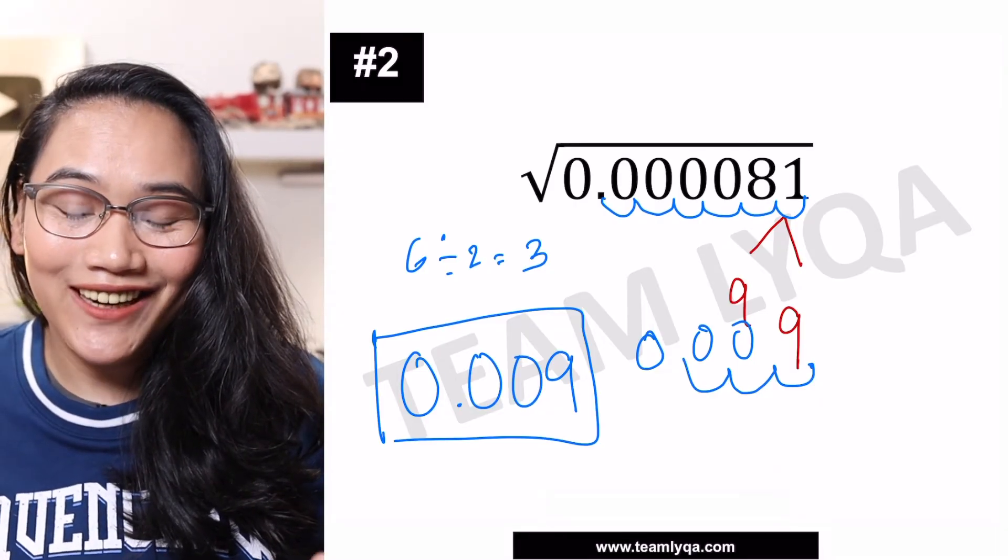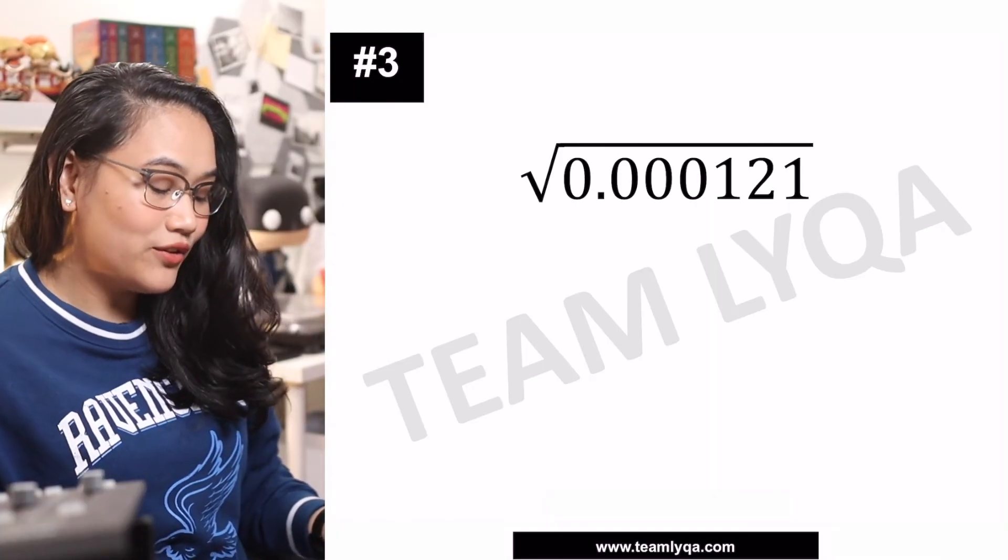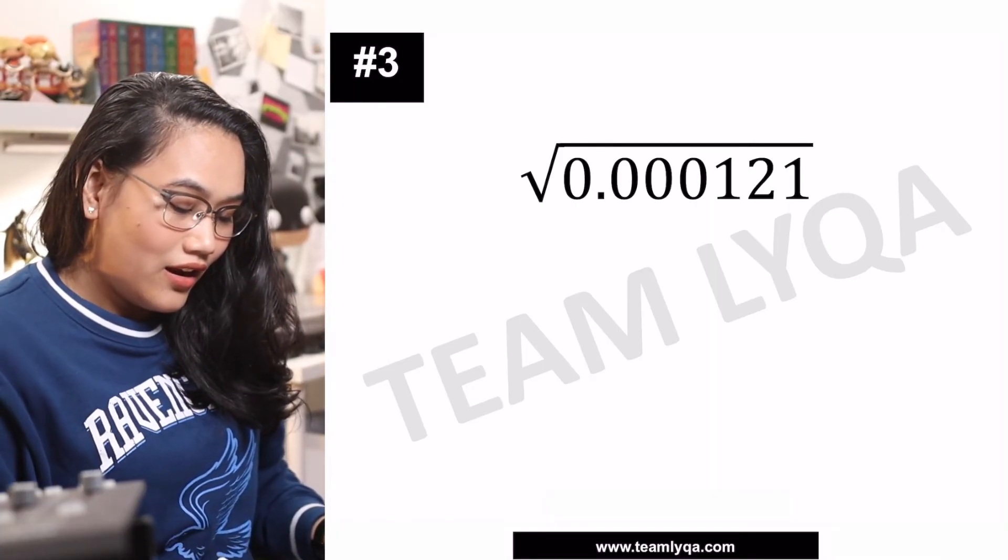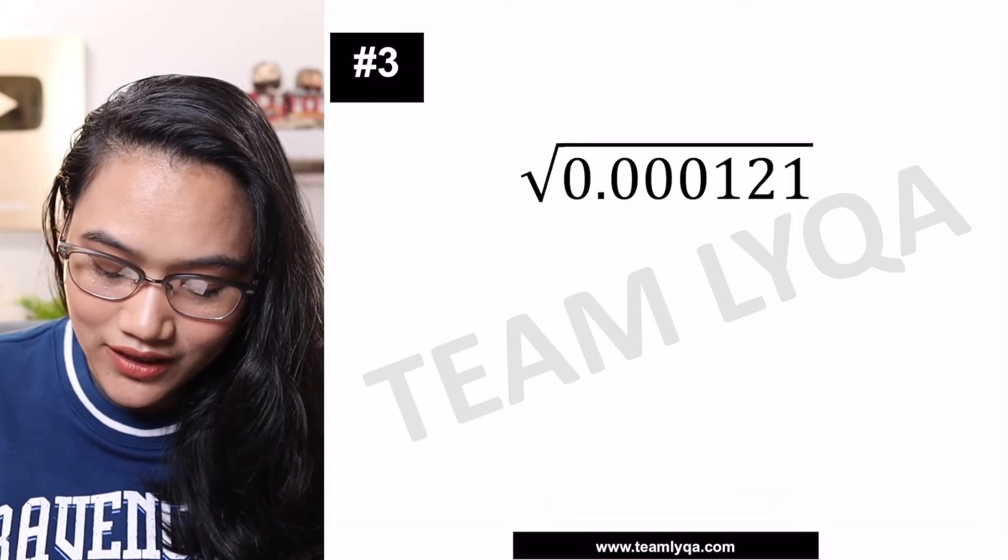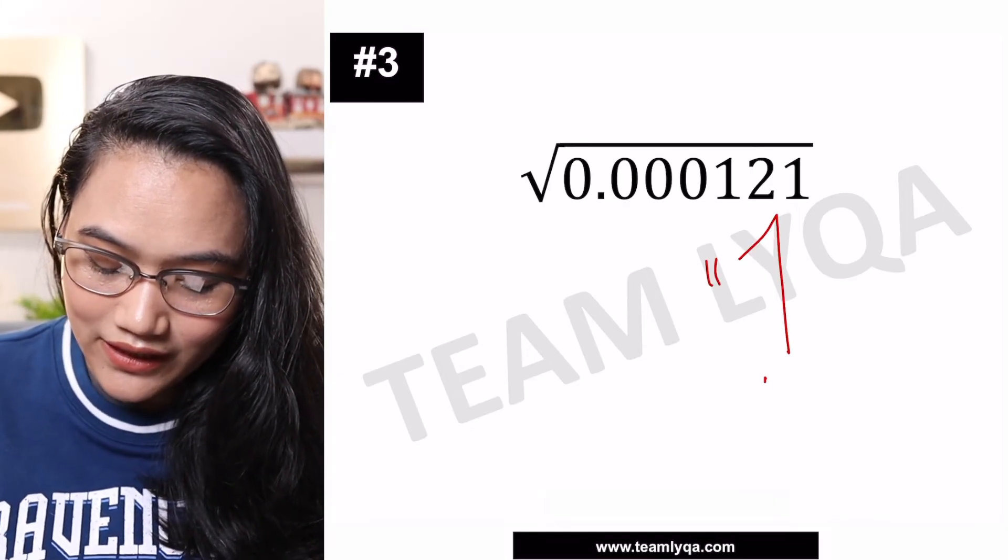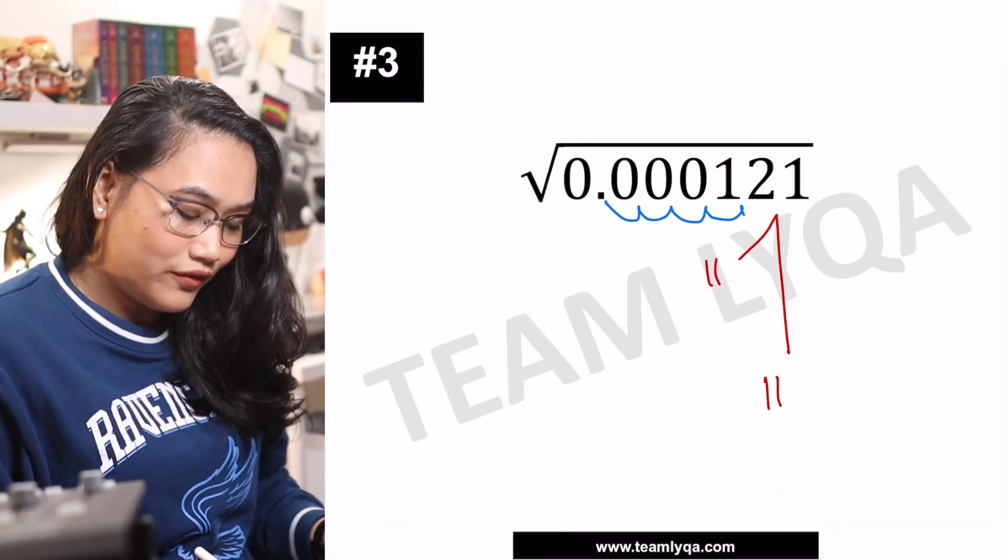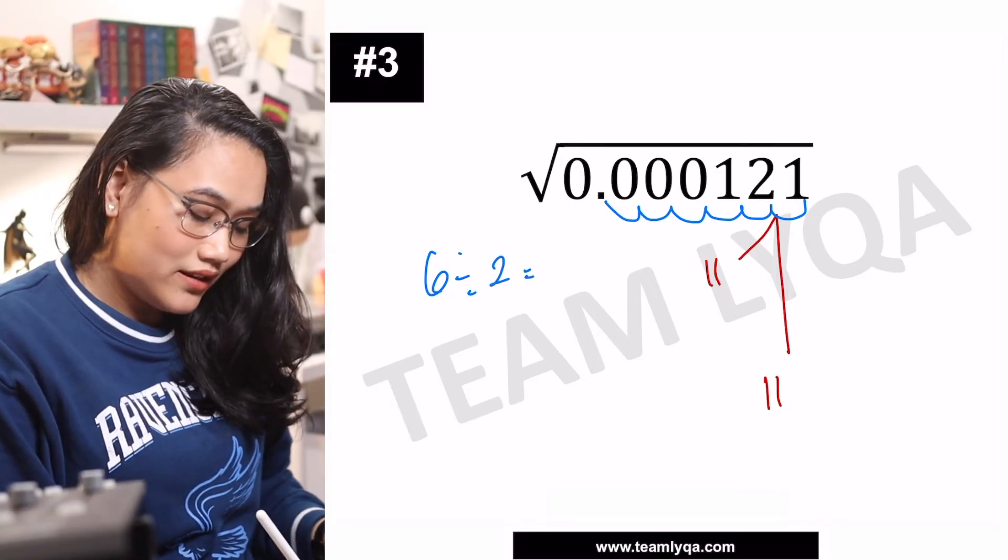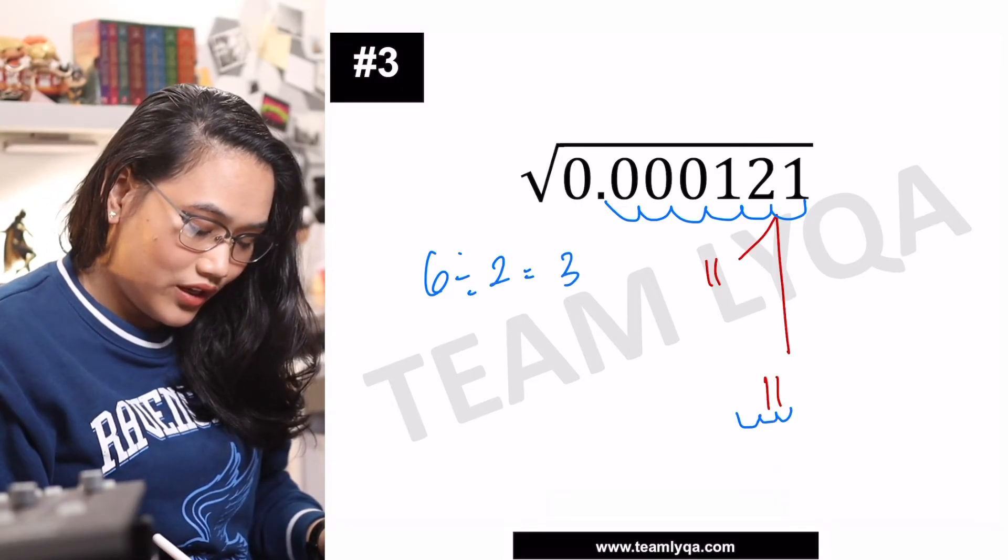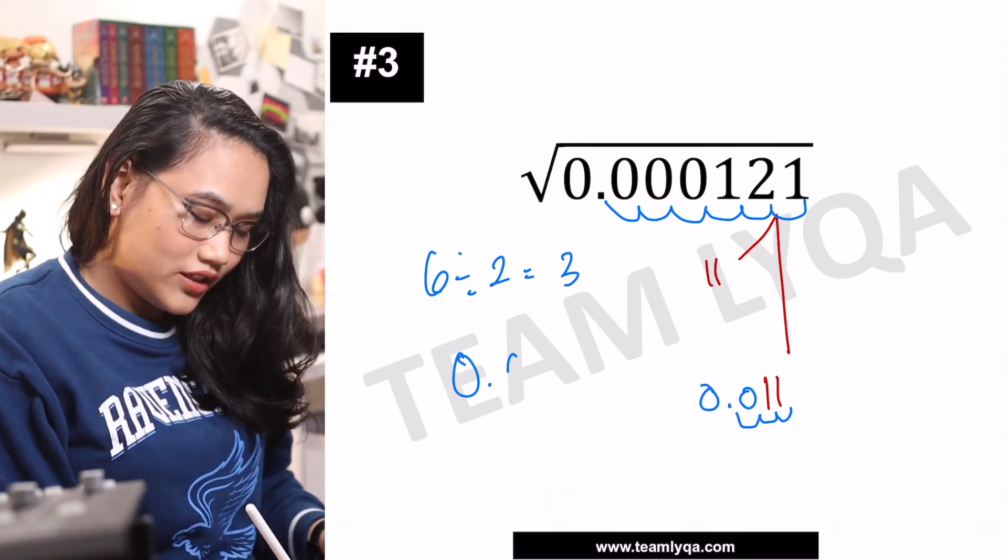Let's raise the level of difficulty a bit. We have this number, √0.00121. 121 when we get the square root is 11 times 11. Next, we're going to count the decimal places. 1, 2, 3, 4, 5, 6. 6 divided by 2 is 3. 1, 2, 3. So the answer is 0.011.